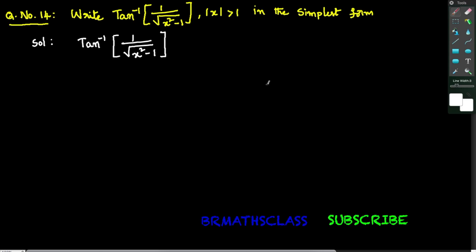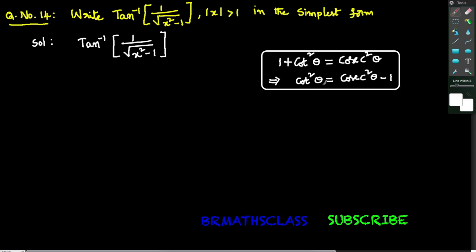From trigonometric identities we know this formula: 1 plus cot squared theta equals cosecant squared theta. From this we can write cot squared theta equals cosecant squared theta minus 1.